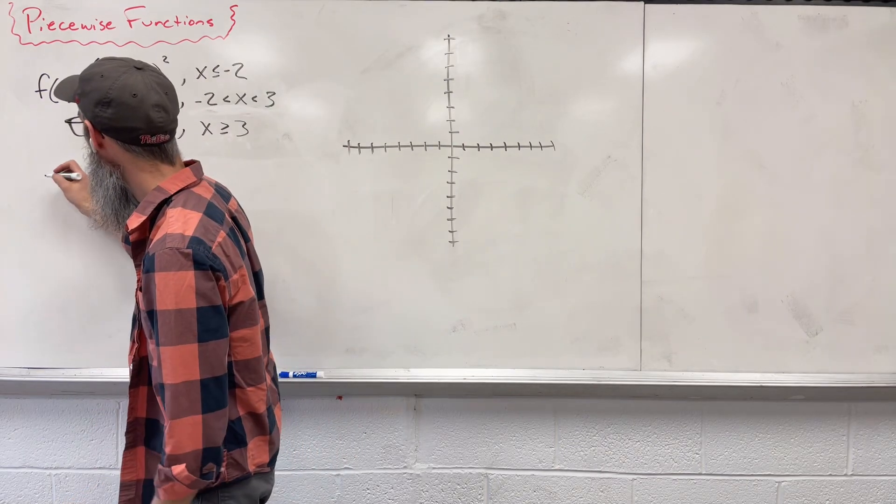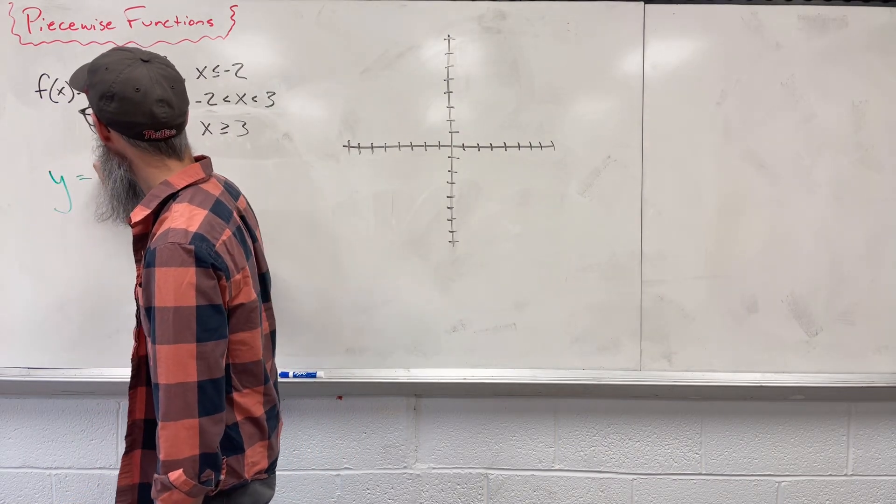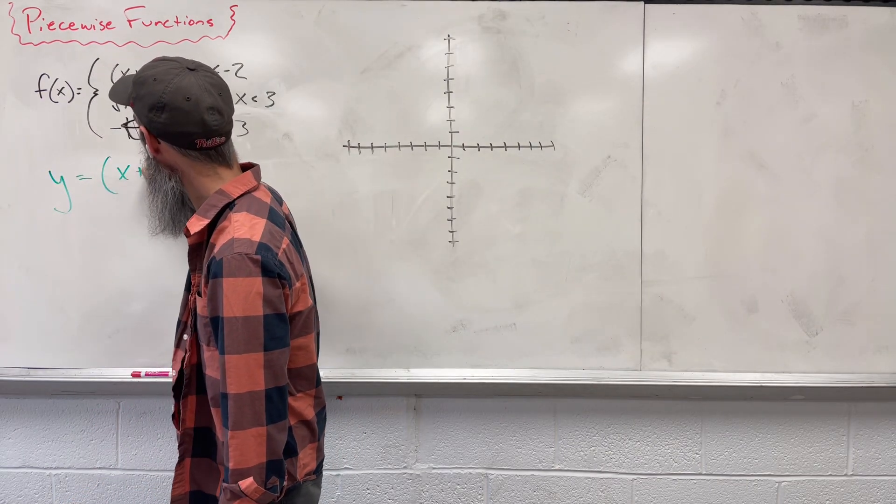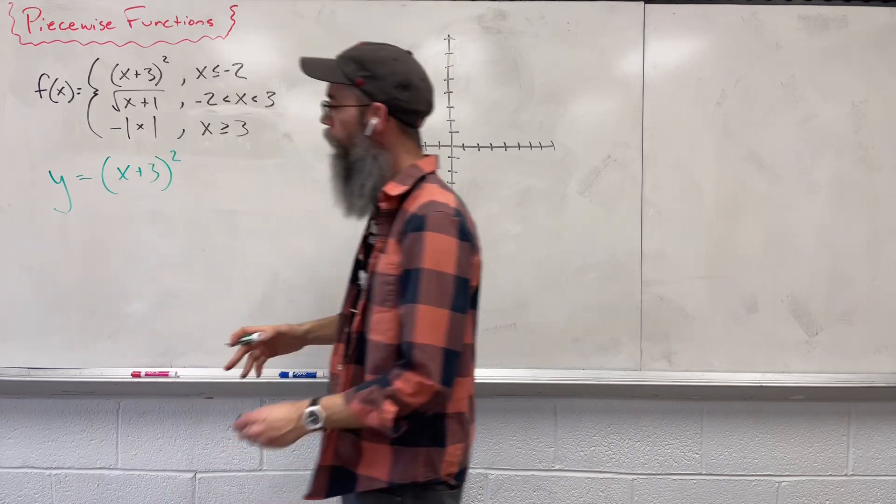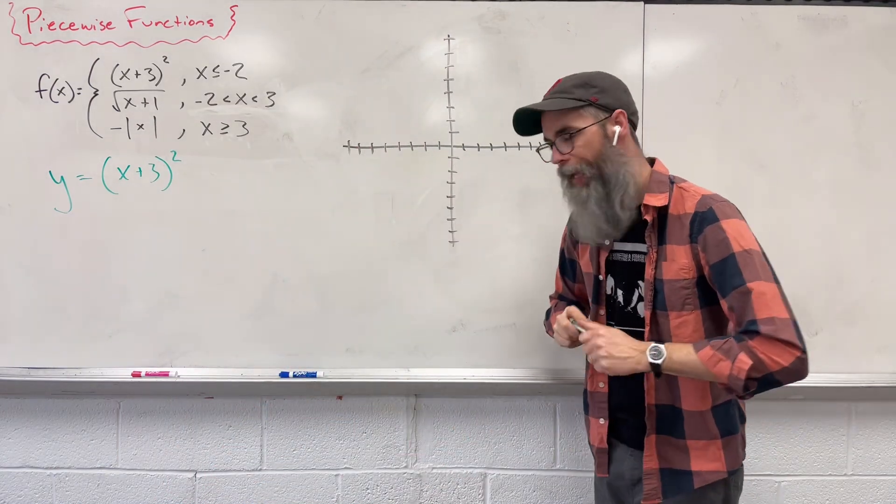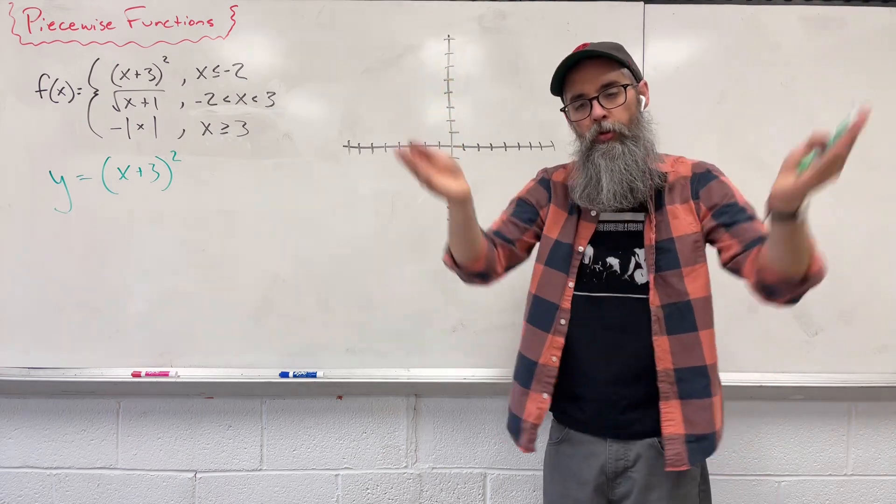So let's write it that way, keep it easier on our eyes. y equals (x + 3) squared. Because we have an exponent of 2, we know that we're going to have a parabola. We know we're going to have that u-shaped graph.